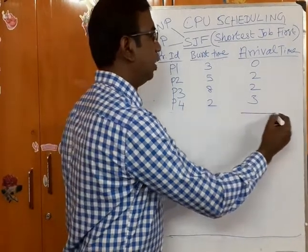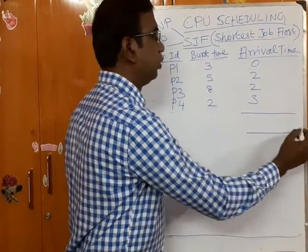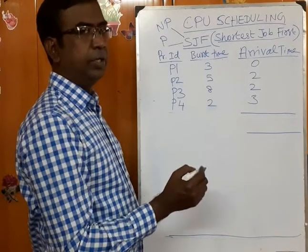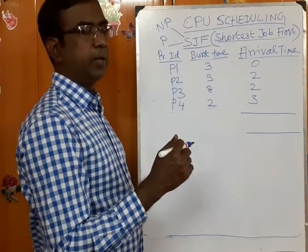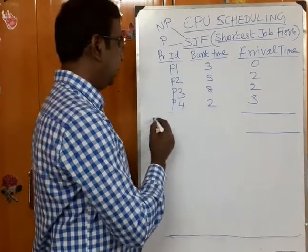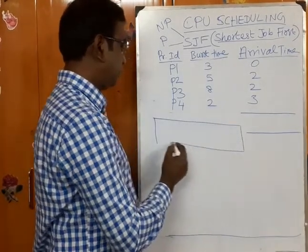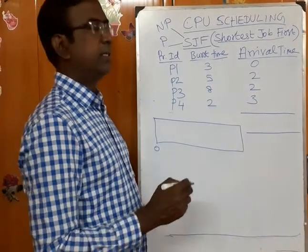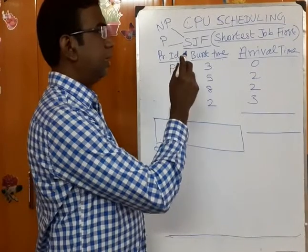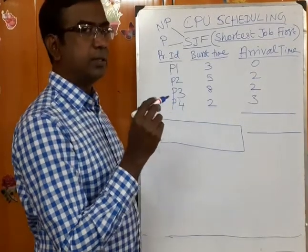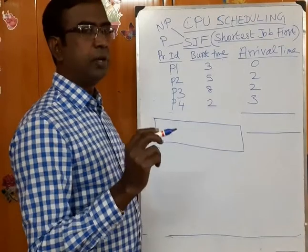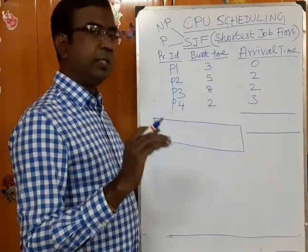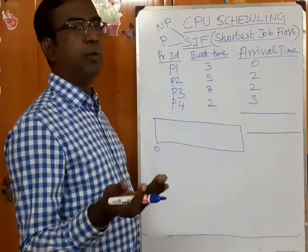We may have a queue, but as I mentioned, this is not the actual queue data structure — it is a normal ready queue from which the CPU will select the process. We are going to discuss non-preemptive SJF. Non-preemptive means the current process will not get suspended; once it enters the CPU, it will complete and then only come out.